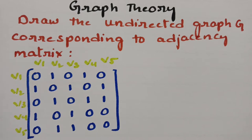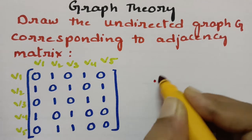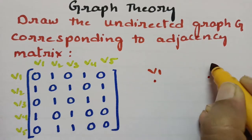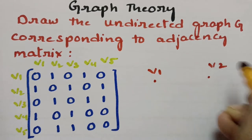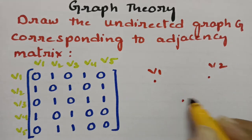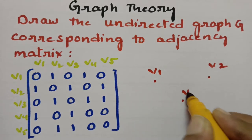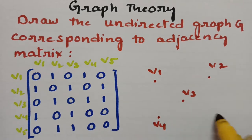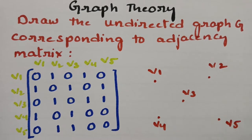See here: this is v1, this is v2, this is v3, this is v4, and here this is v5. Now I have to plot the graph.